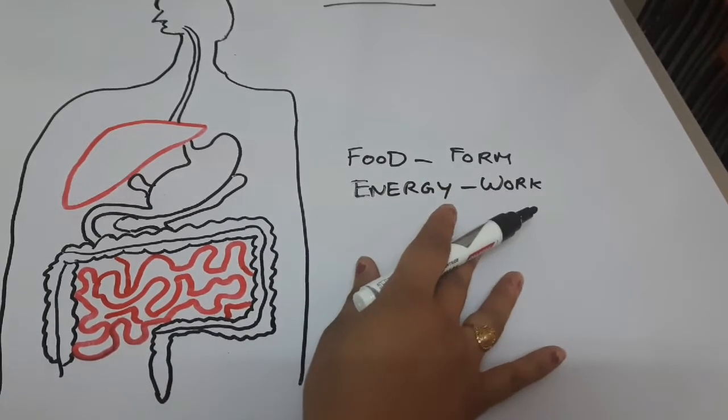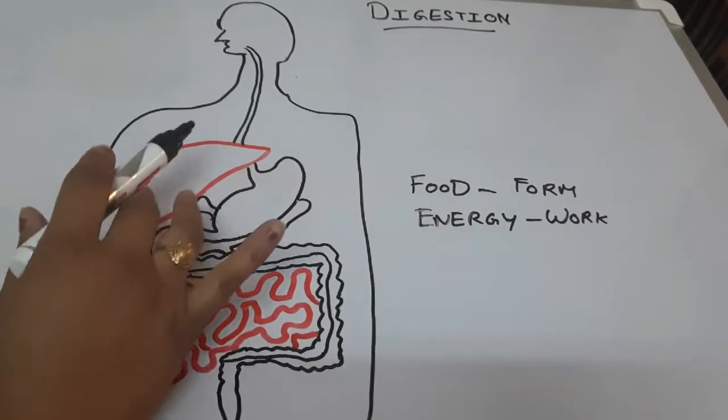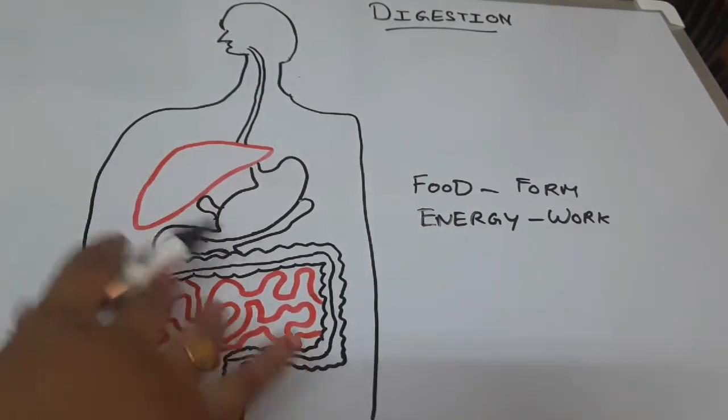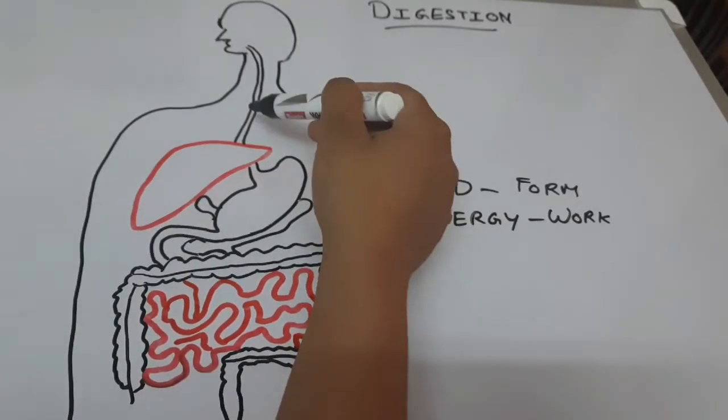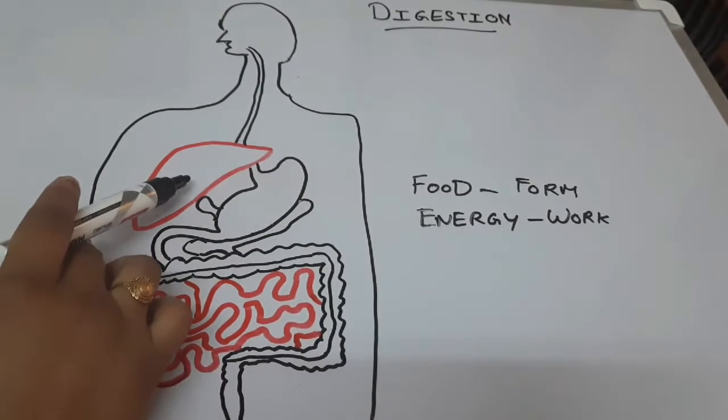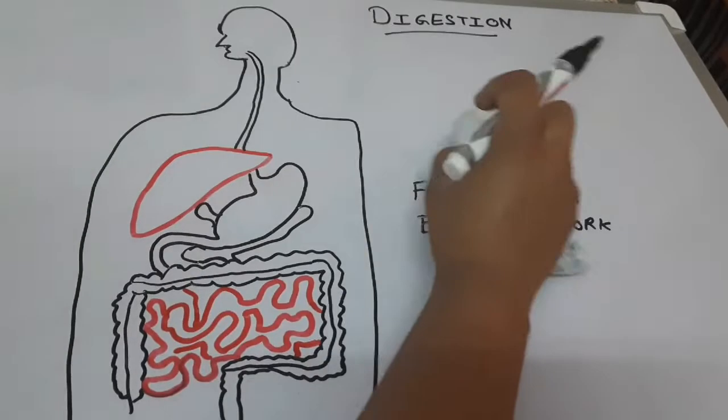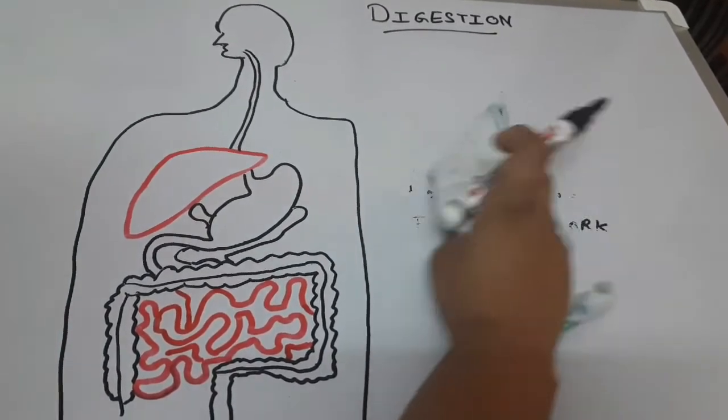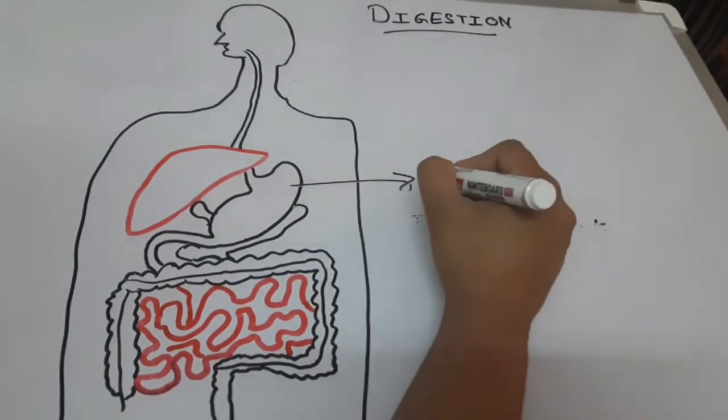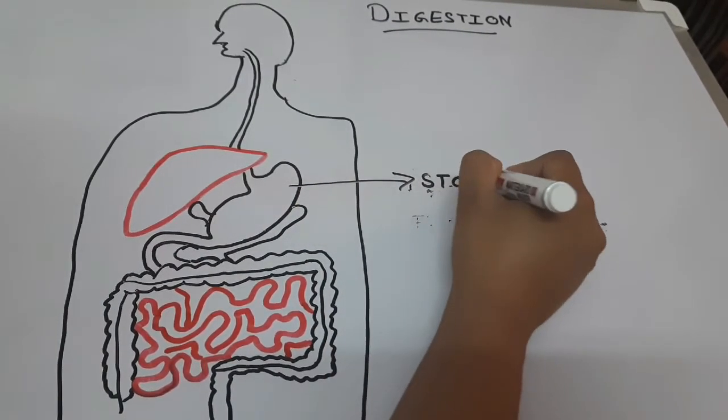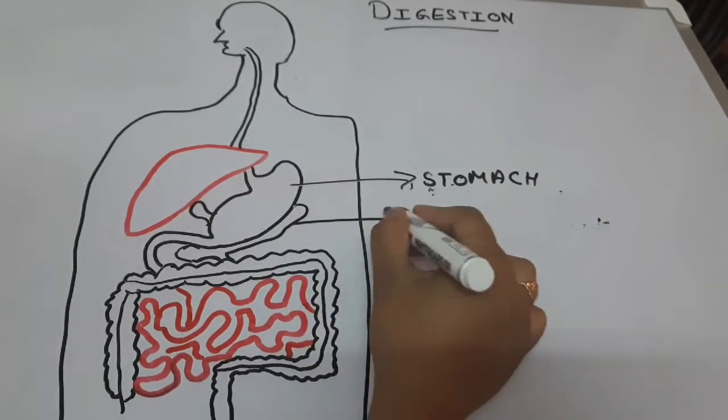Okay, so this is why digestion is required. Now let's start. This is the diagram of the internal organs of the body. First of all, let me tell you this is the food pipe, this is the liver, this is the stomach, these are the pancreas.